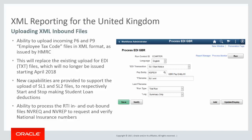Previously, we delivered the ability to generate the RTI outbound files — FPS, EPS, and EYU — in XML format. With Image 24, we're providing the ability to import inbound files, as well as the remaining outbound file for NVREQ. This completes our discussion of the XML reporting for the United Kingdom feature.